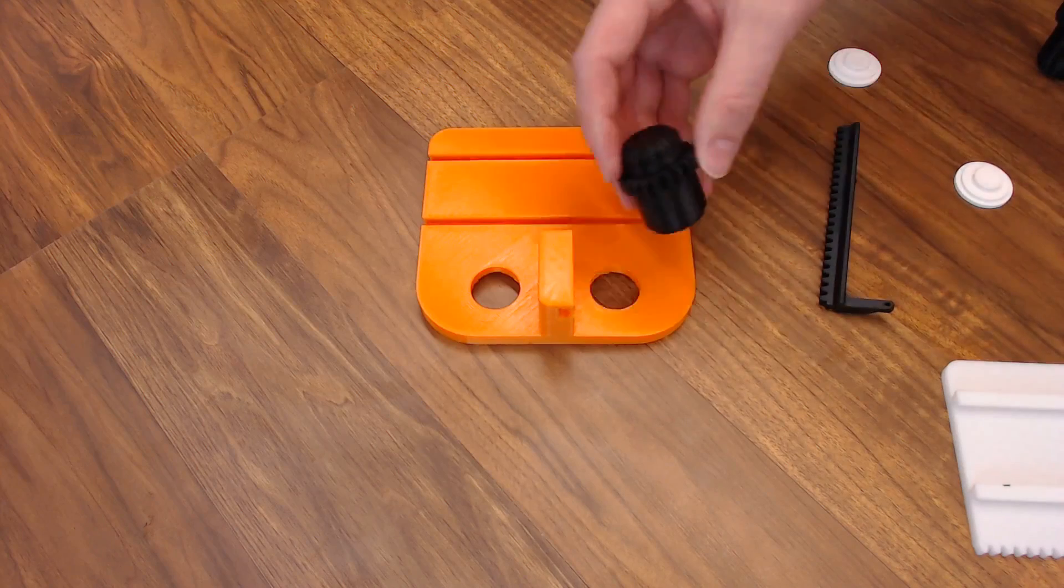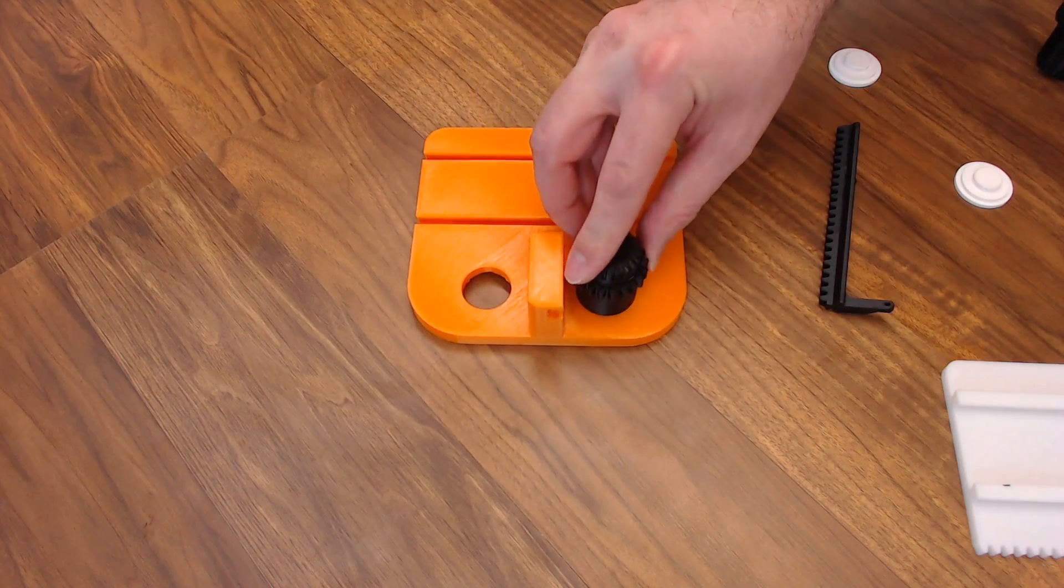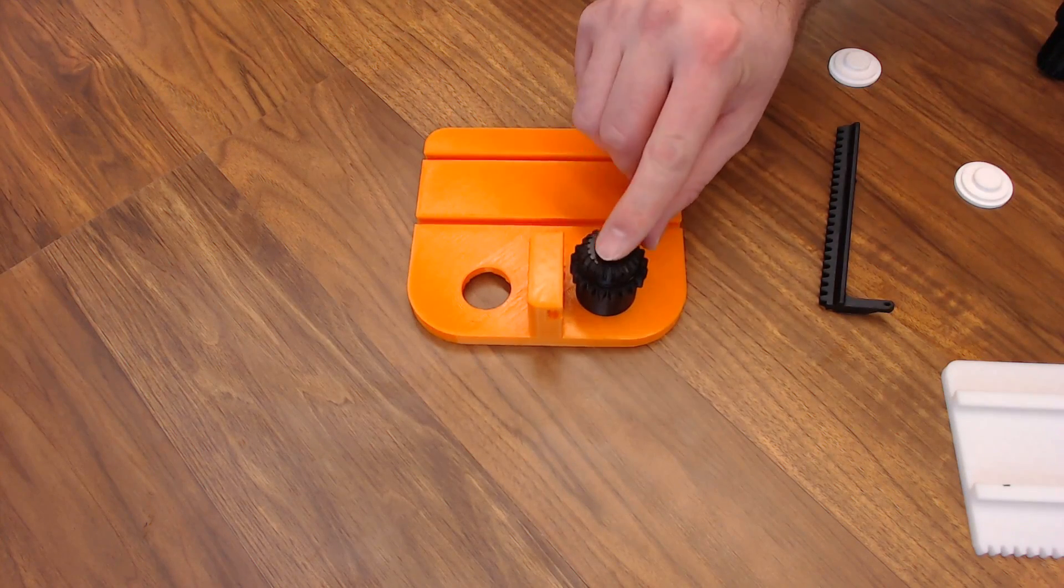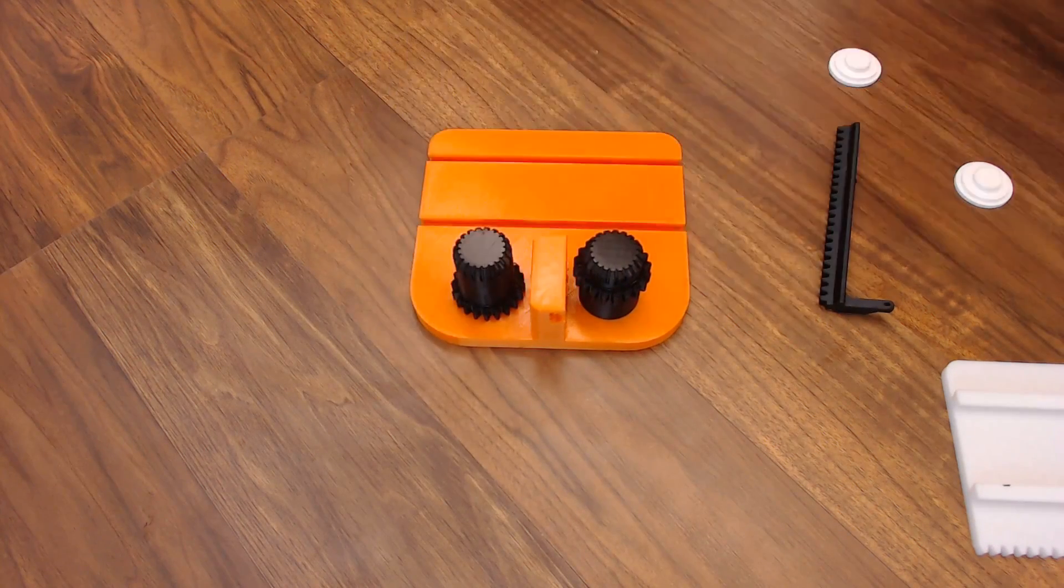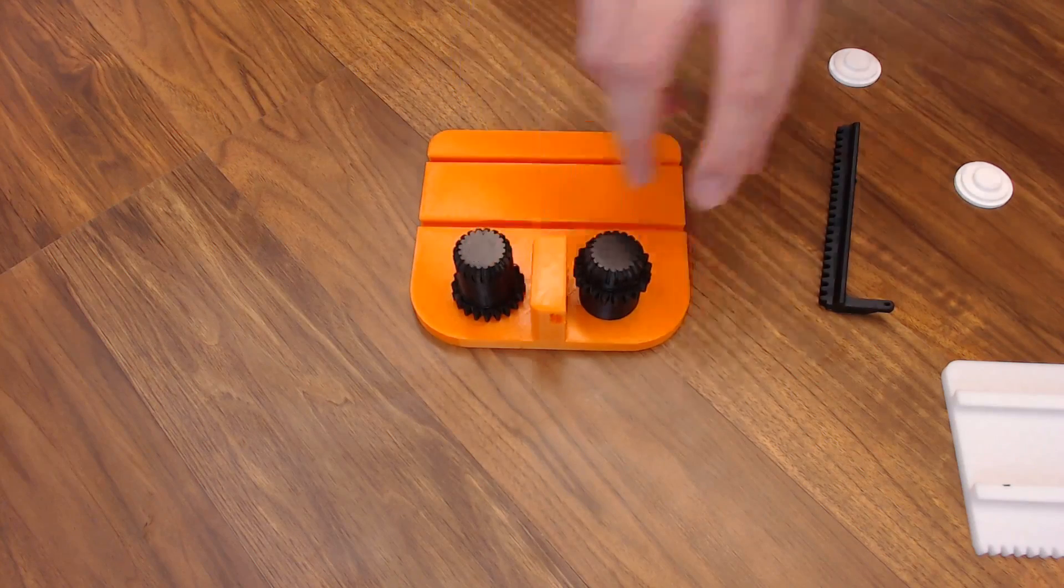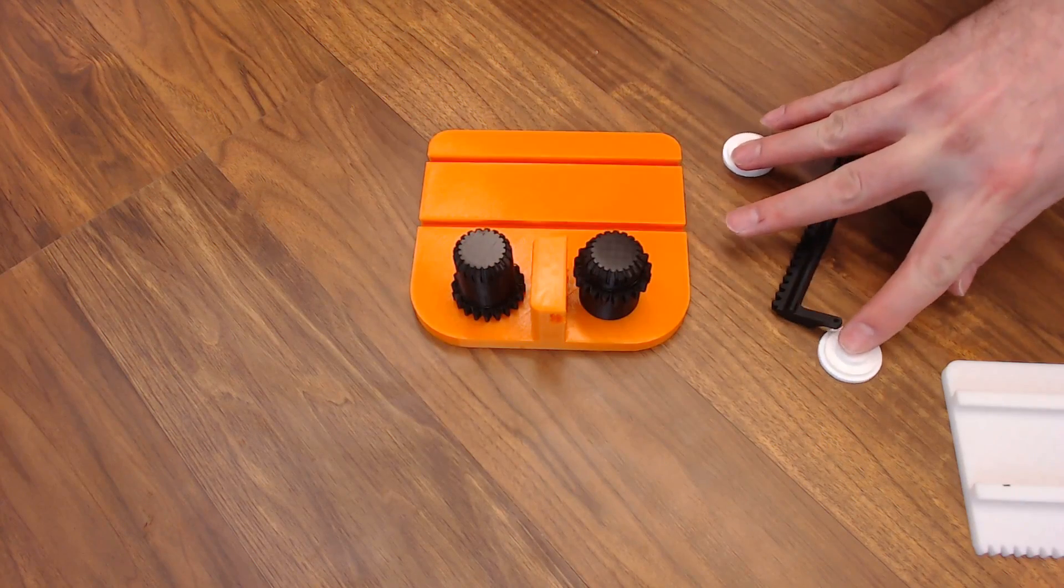So the assembly is pretty straightforward. You put your Y knob on the right. The Y knob is the one with the gears that are higher on the knob. And you put your X knob on the left, the gears that are lower on the knob. And then you support those two knobs with these two holders from the back.